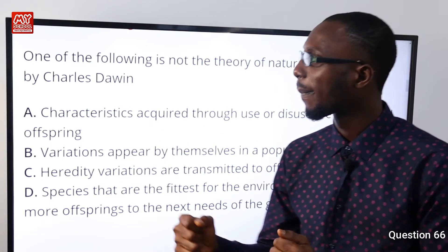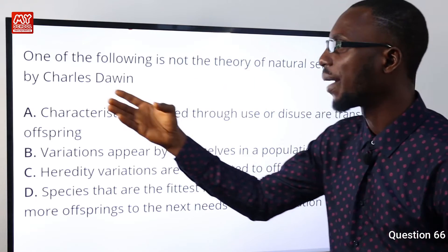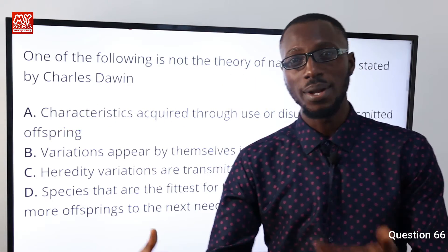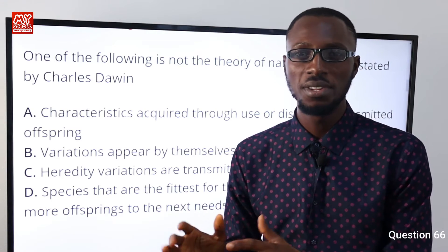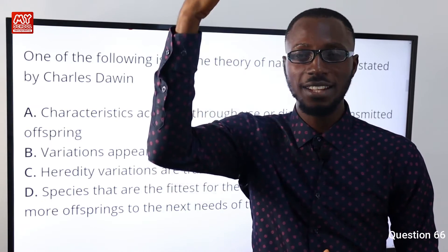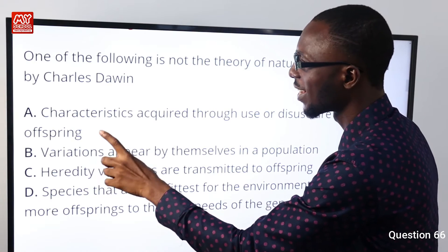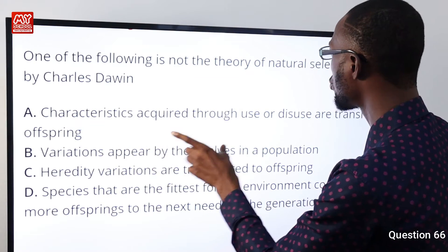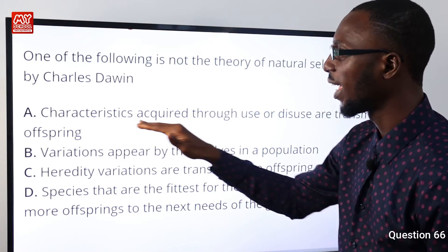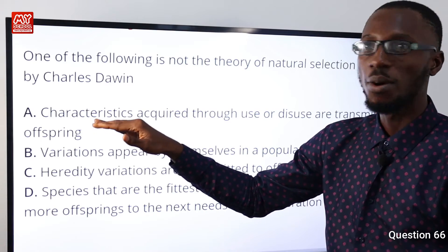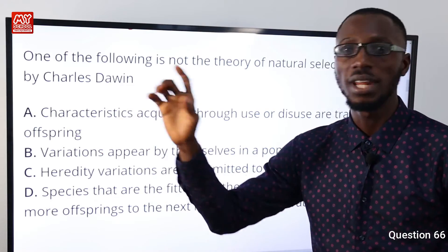Question number 66: One of the following is not a theory of natural selection stated by Charles Darwin. You should recall that Jean Lamarck proposed the theory of use and disuse, a practical example being the long necks of giraffes. Going through the options, option A states that characteristics acquired through use or disuse are transmitted to offspring. Option A is correct — it was not proposed by Charles Darwin but by Jean Lamarck.